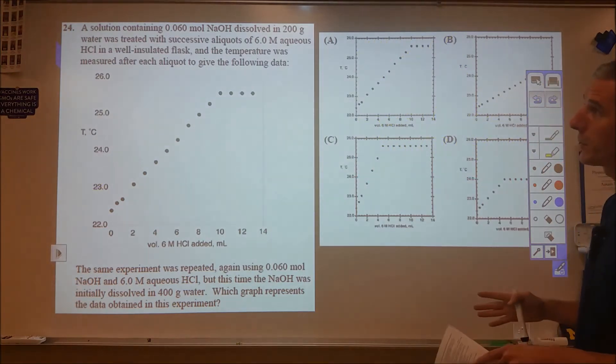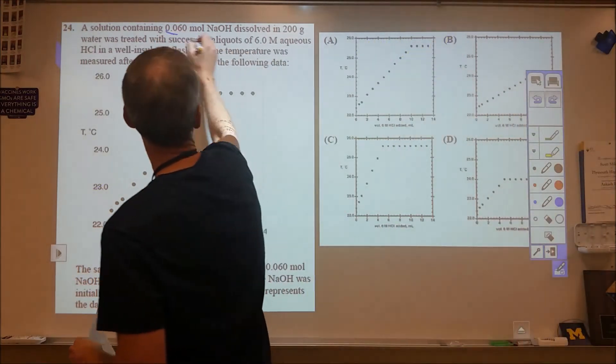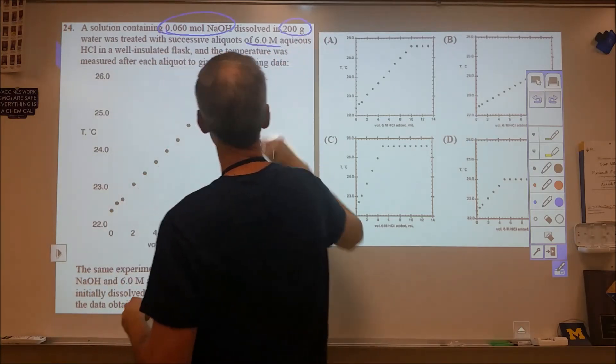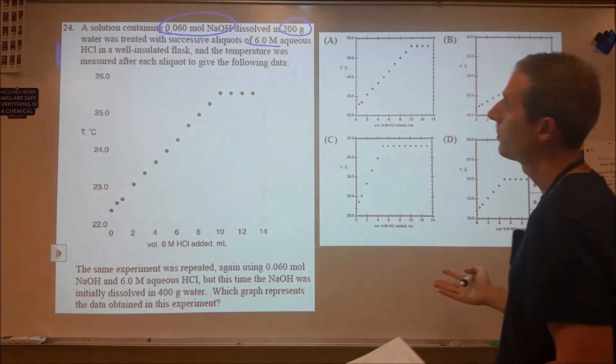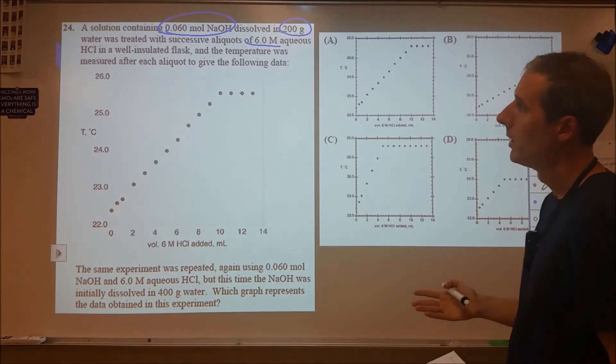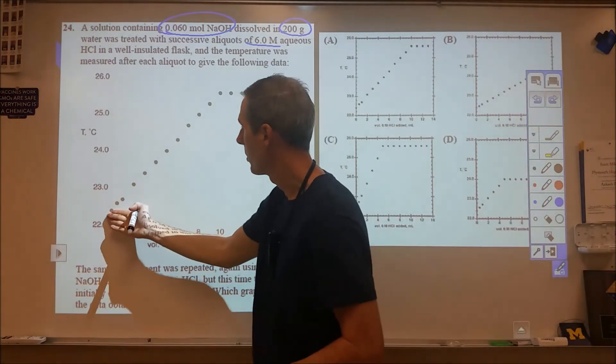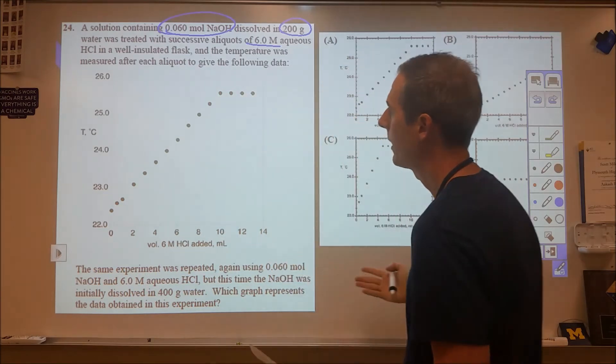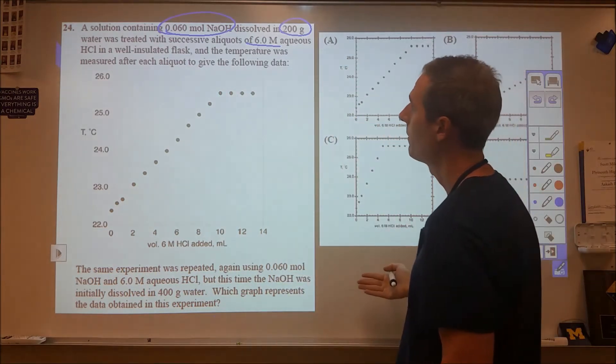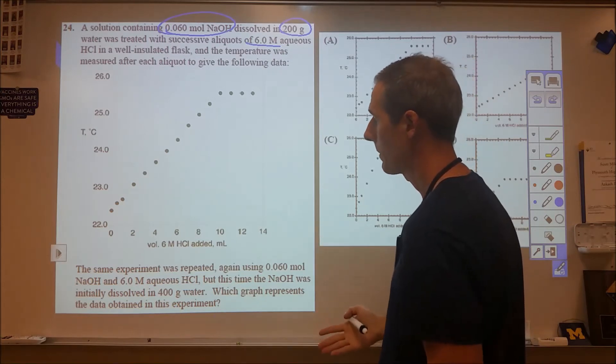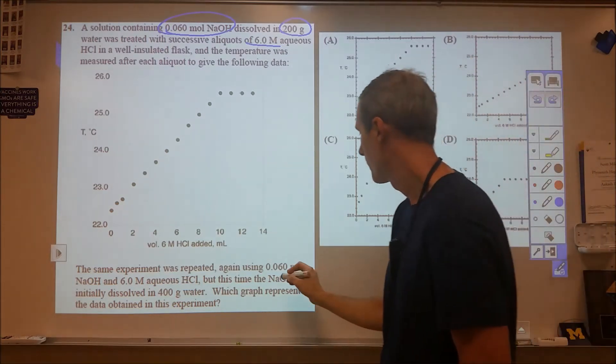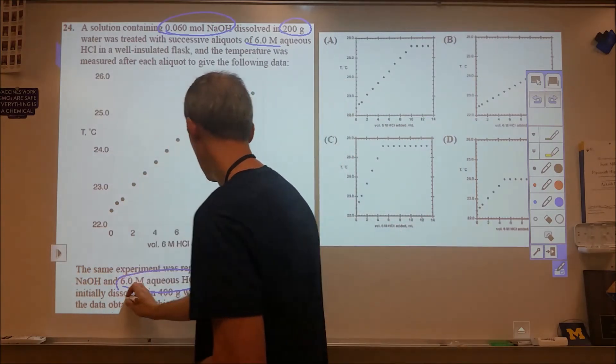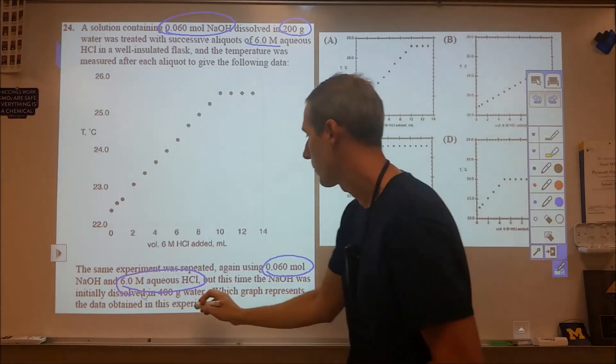This one's a really good question. I like this. So we have 0.06 moles of NaOH dissolved in 200 grams of water, and we titrate it with six molar HCl. As that reaction occurs, it's an exothermic reaction, energy is transferred to the water, and it gets higher and higher in temperature until eventually it runs out of the NaOH, and the temperature stops going up. Then they repeat it, but they tweak it. So it's still 0.06 moles of NaOH, still six molar HCl, but now it's 400 grams of water.